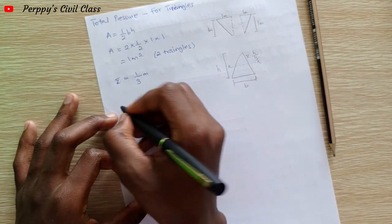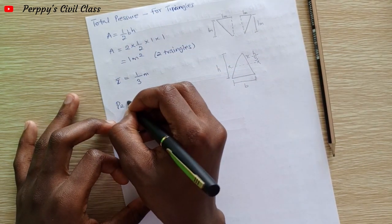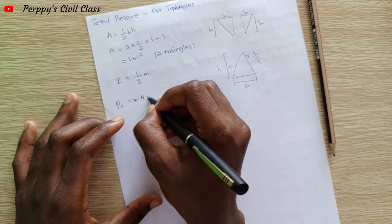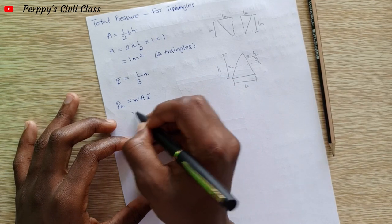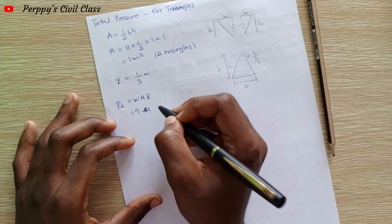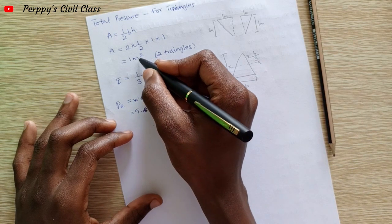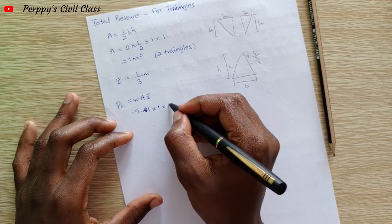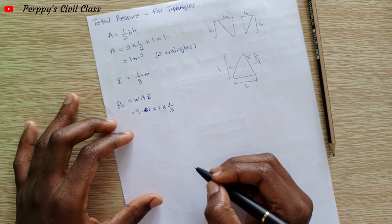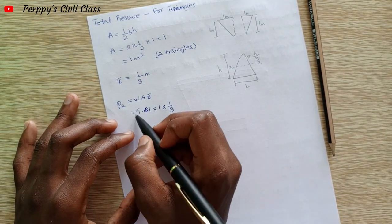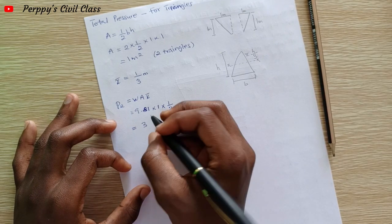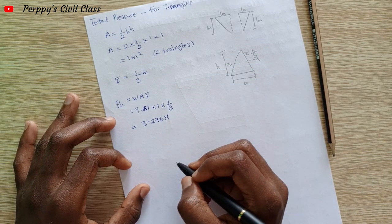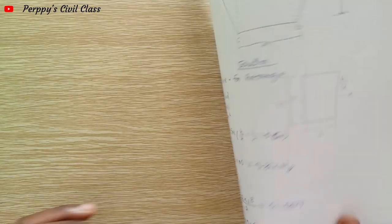We can now calculate the total pressure P2 for the triangles. P2 equals the specific weight multiplied by area multiplied by x: 9.81 multiplied by one meter squared, multiplied by one divided by three. This gives us P2 equal to 3.27 kilonewtons.